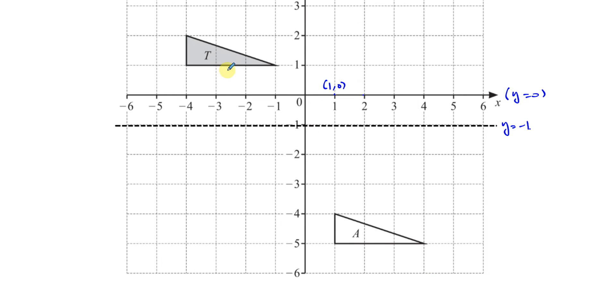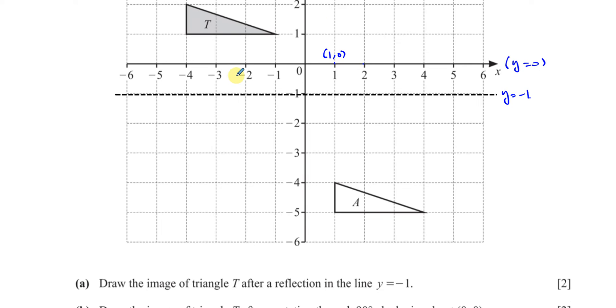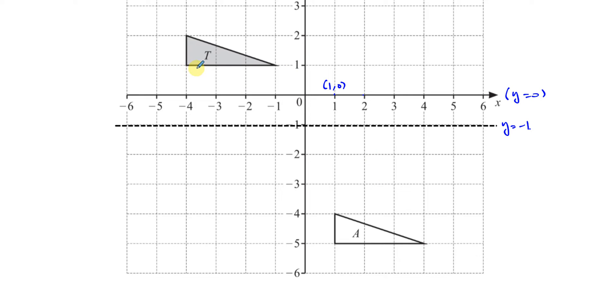So we have to reflect triangle T, which is the shaded one, in the line Y equals negative one. A reflection is such that every point is the same distance from the mirror line, but on the other side of the mirror line. So this point, the perpendicular distance between this point and the mirror line, its reflection will be the same distance on the other side. So this point is going to be reflected to this point over there, two squares below. And this will be two squares also below. And this is going to be three squares below, because this is three squares above this side, so it's going to be three squares below.